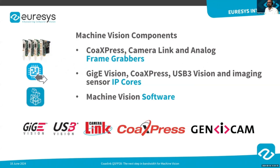First, I will give a brief introduction of Euresys. Euresys is a leading designer and provider of computer vision with almost 40 years of experience in this market. Our products include frame grabbers compatible with CoaXPress, Camera Link, and analog cameras. We also provide certified IP cores for GigE Vision, CoaXPress, and USB3 Vision, as well as image processing software tools and libraries mostly used in inspection applications.